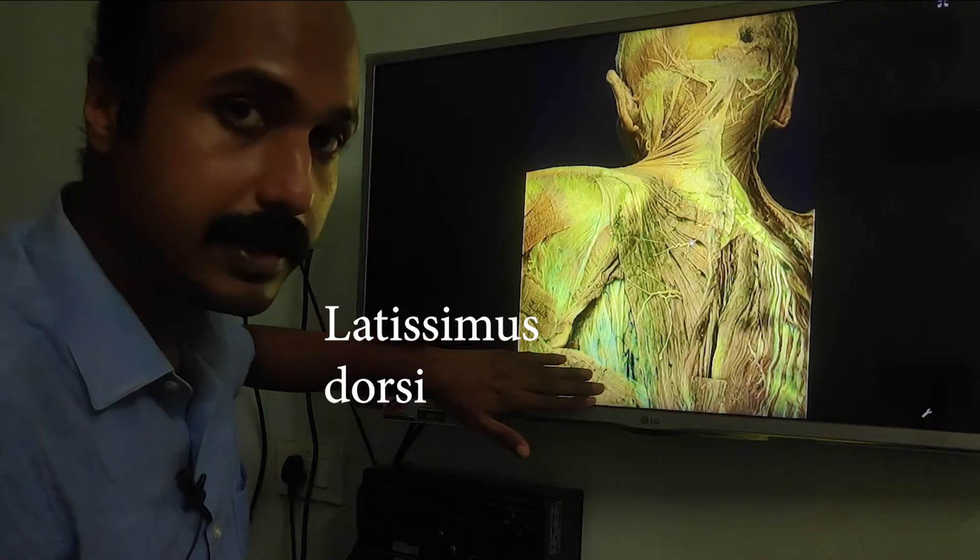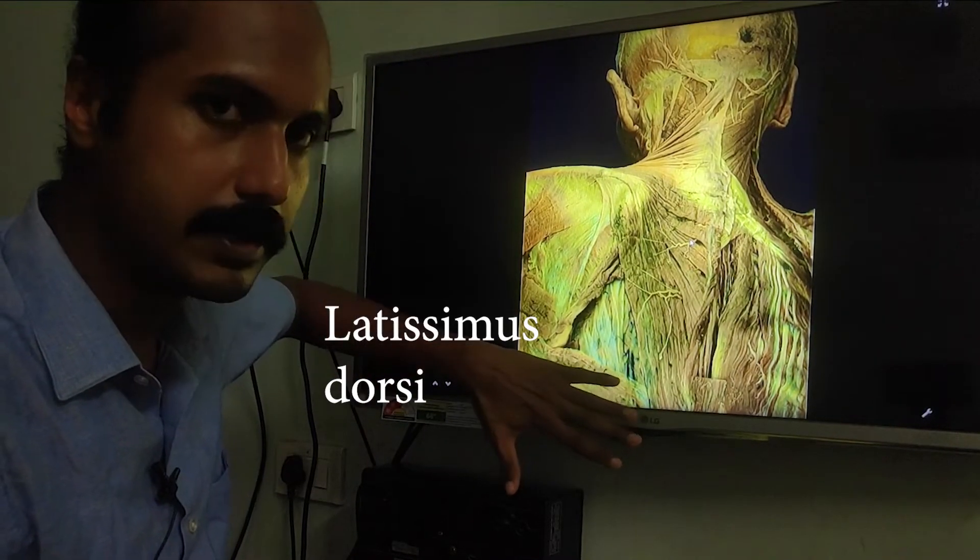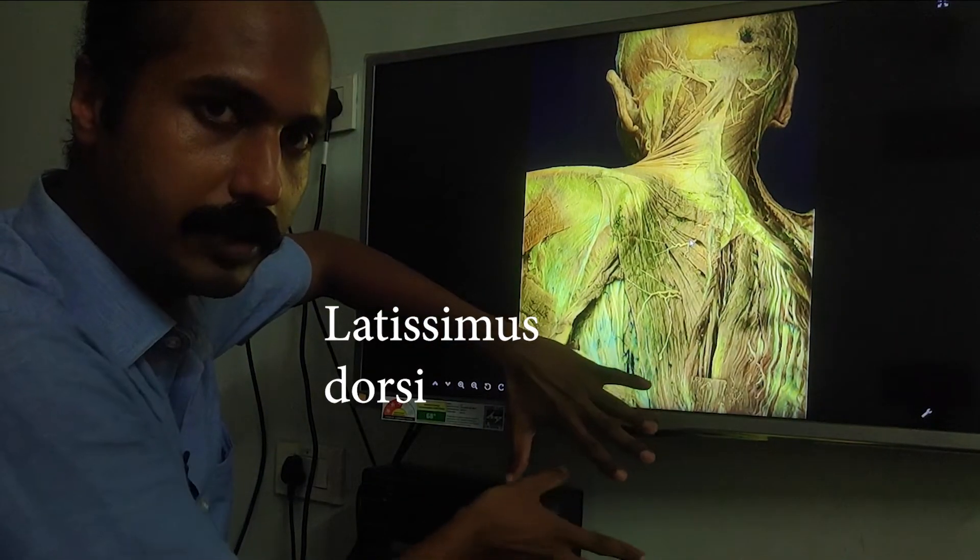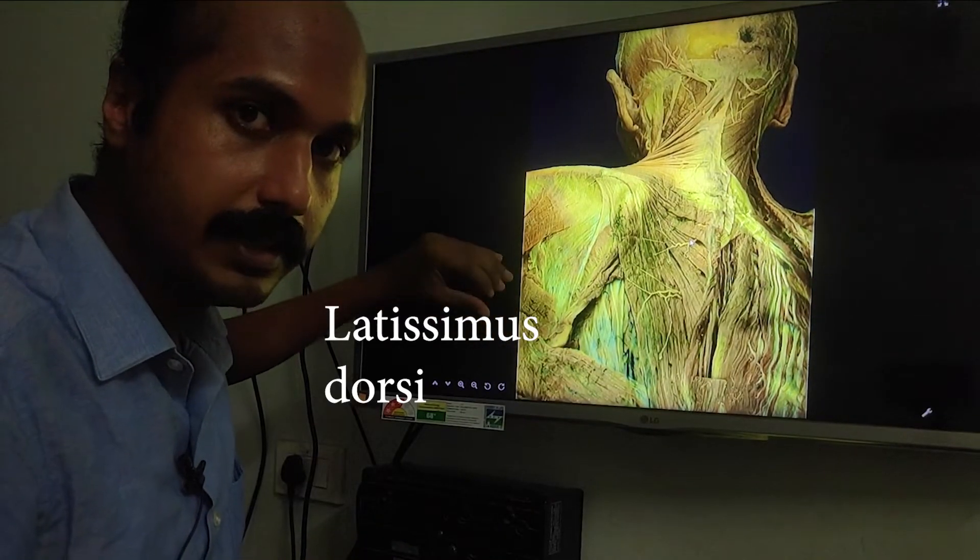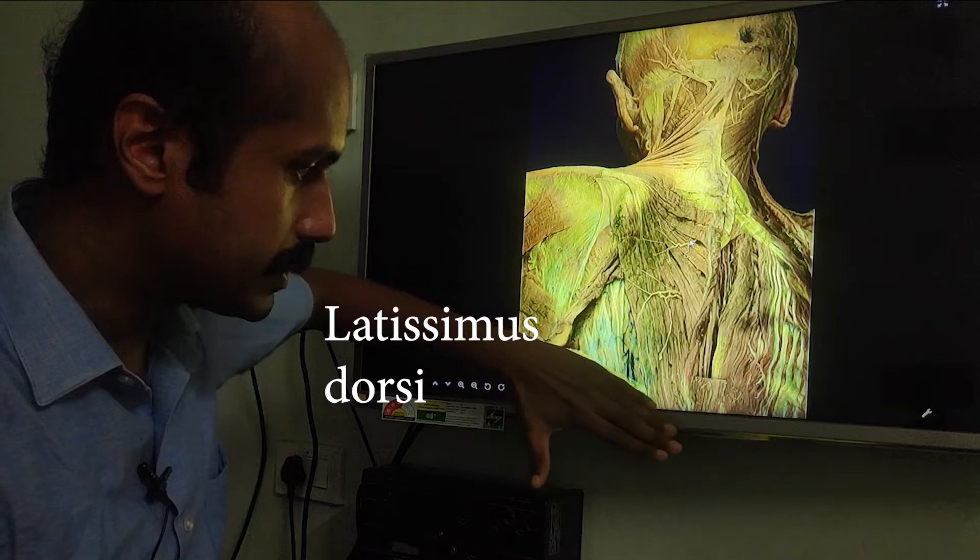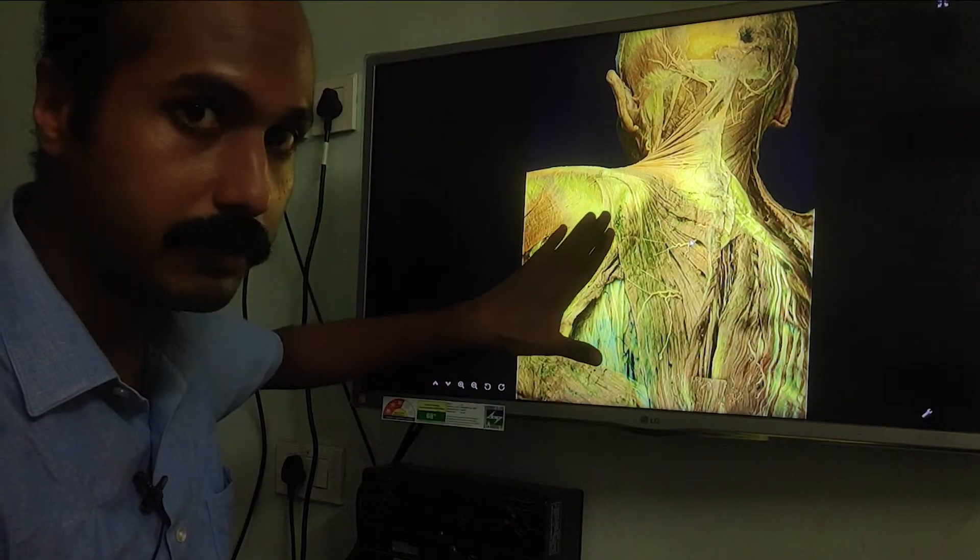This muscle that you see here is the latissimus dorsi, a very powerful and strong muscle that takes a wide origin from a lot of structures in the lower part of the thorax and the pelvis and converges towards the humerus. The upper border of this muscle is located here, and here you have the medial border of the scapula.